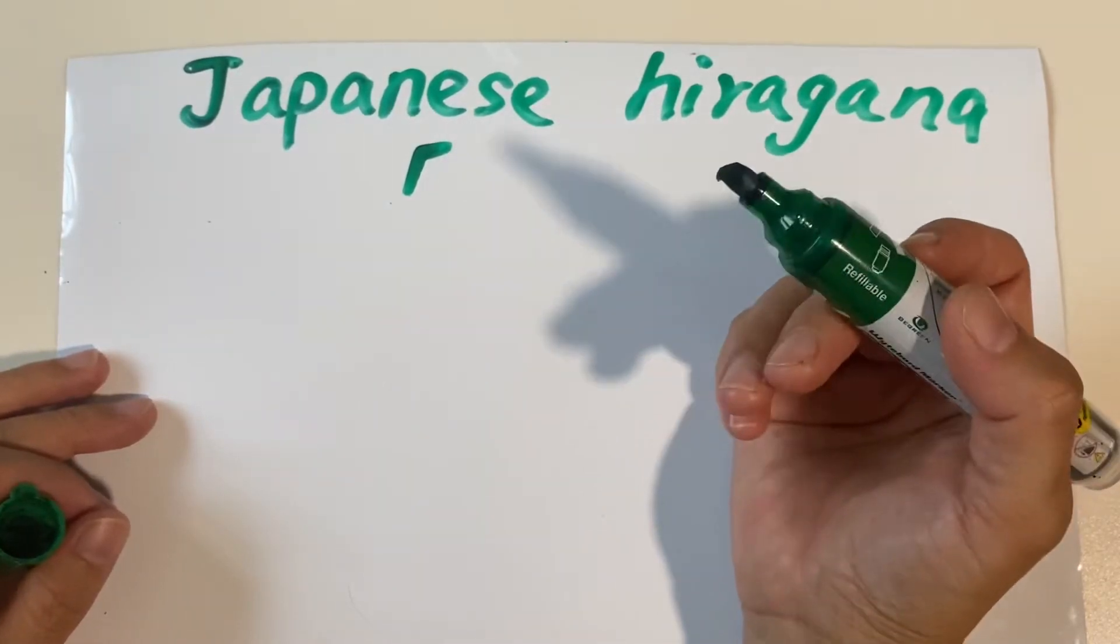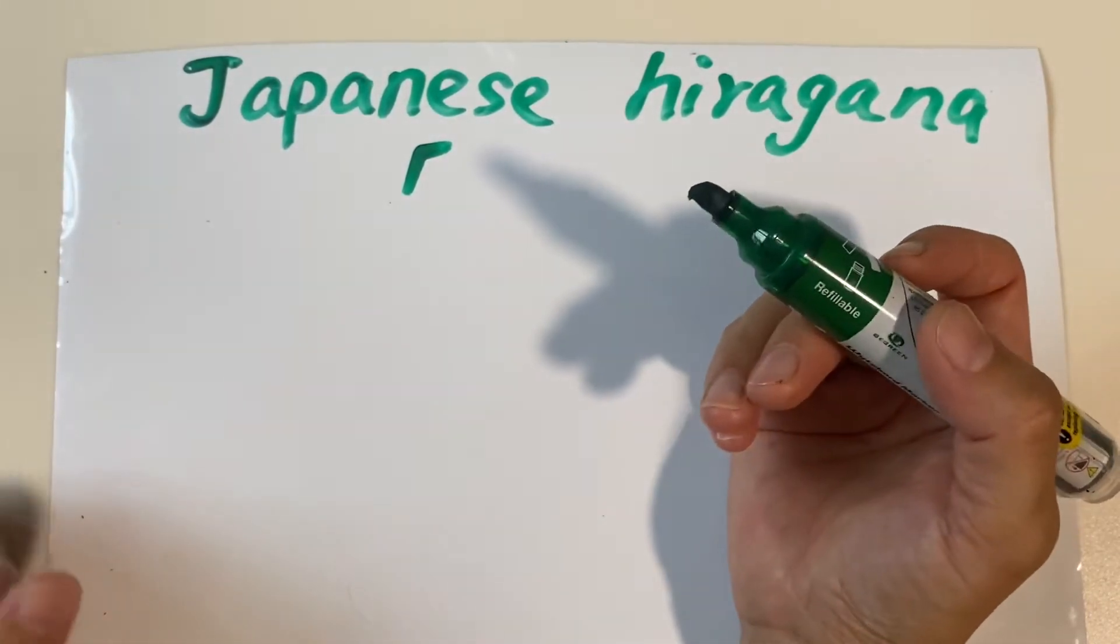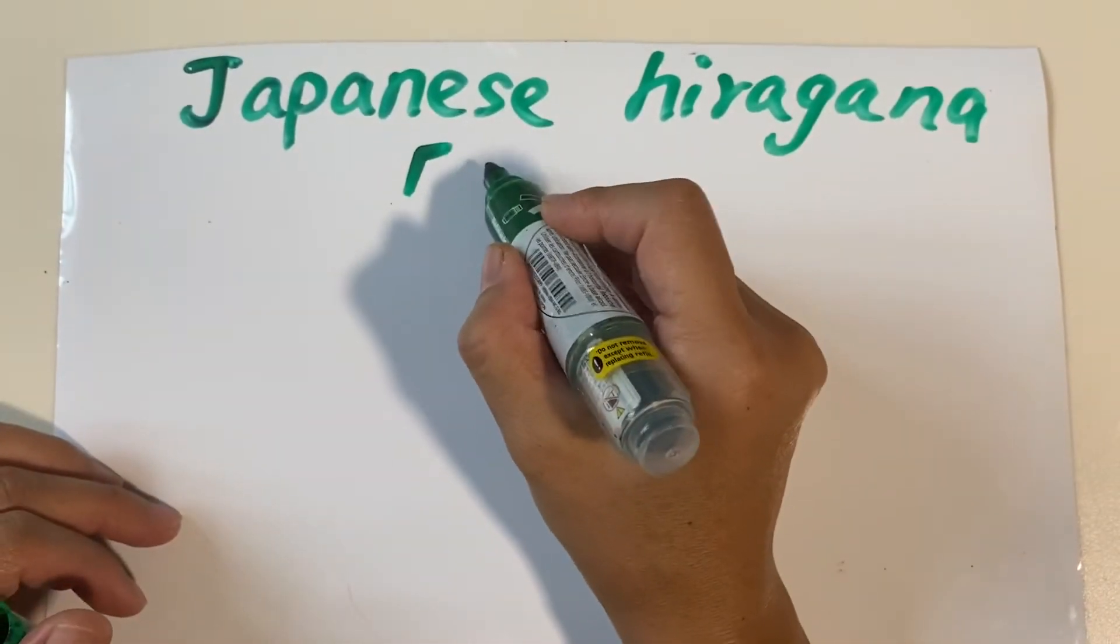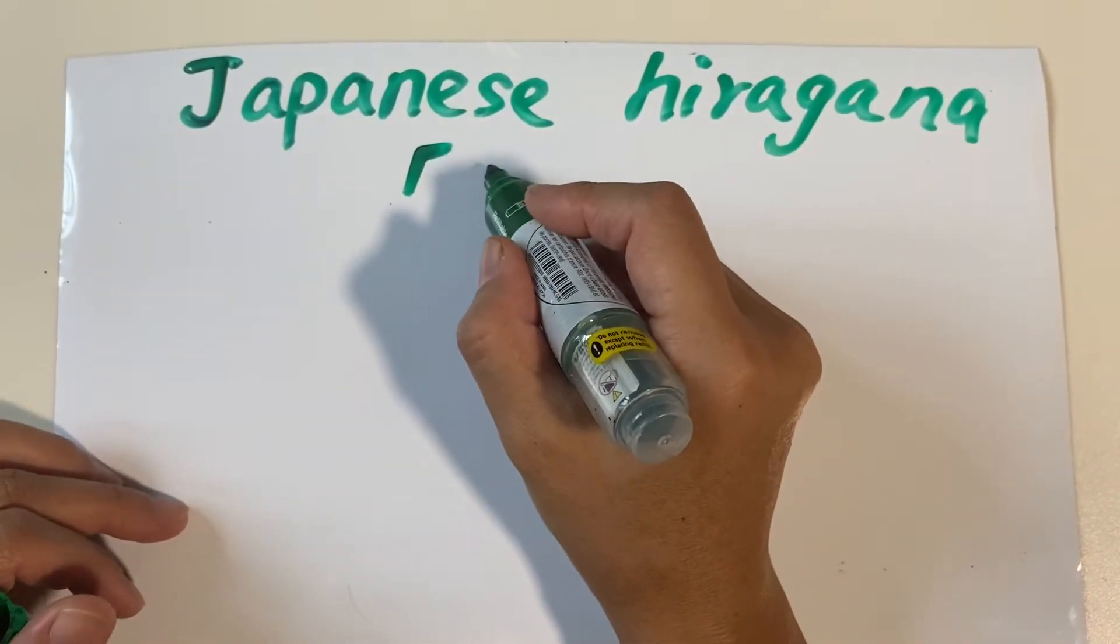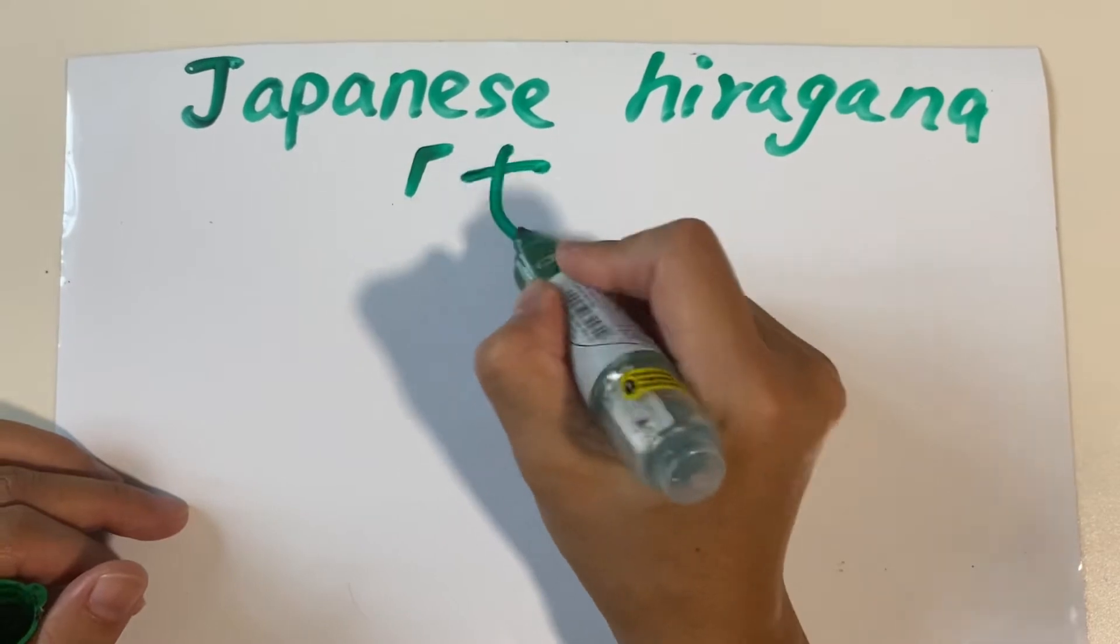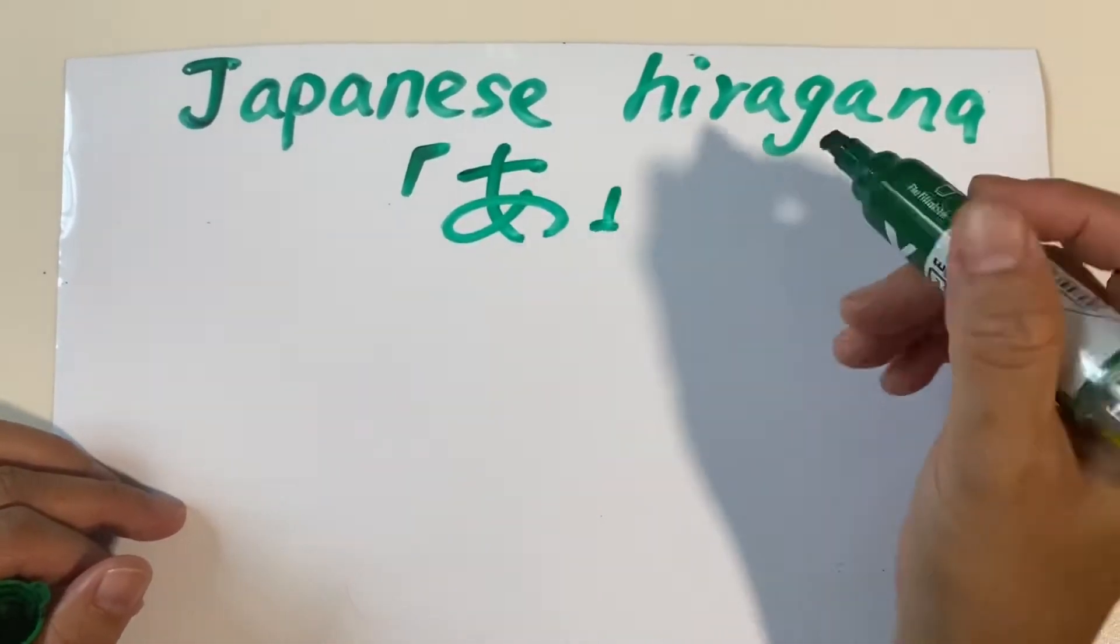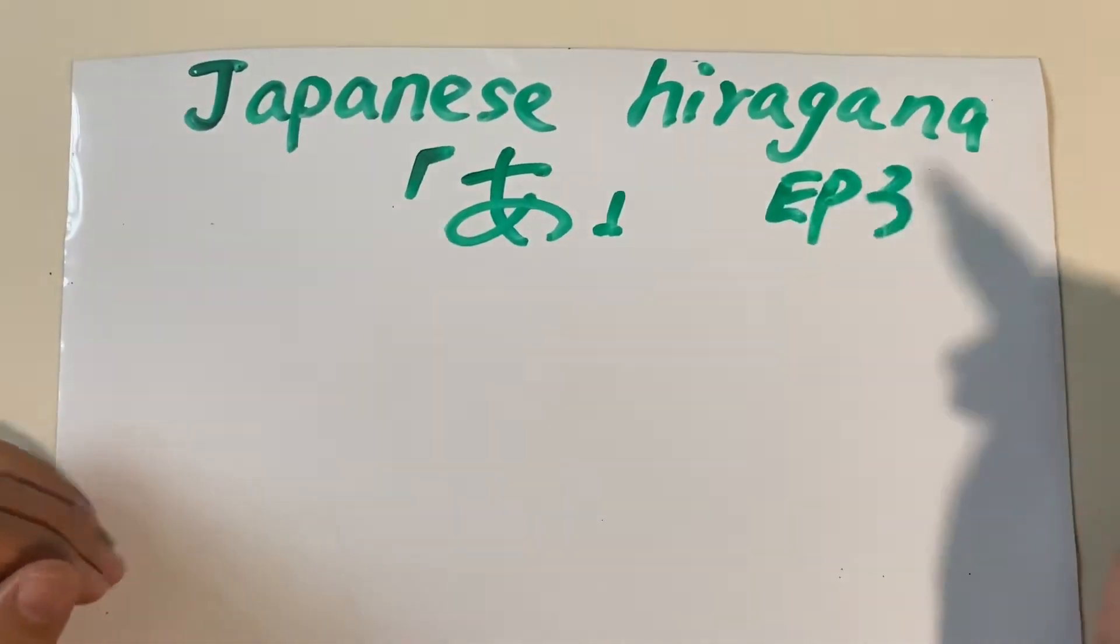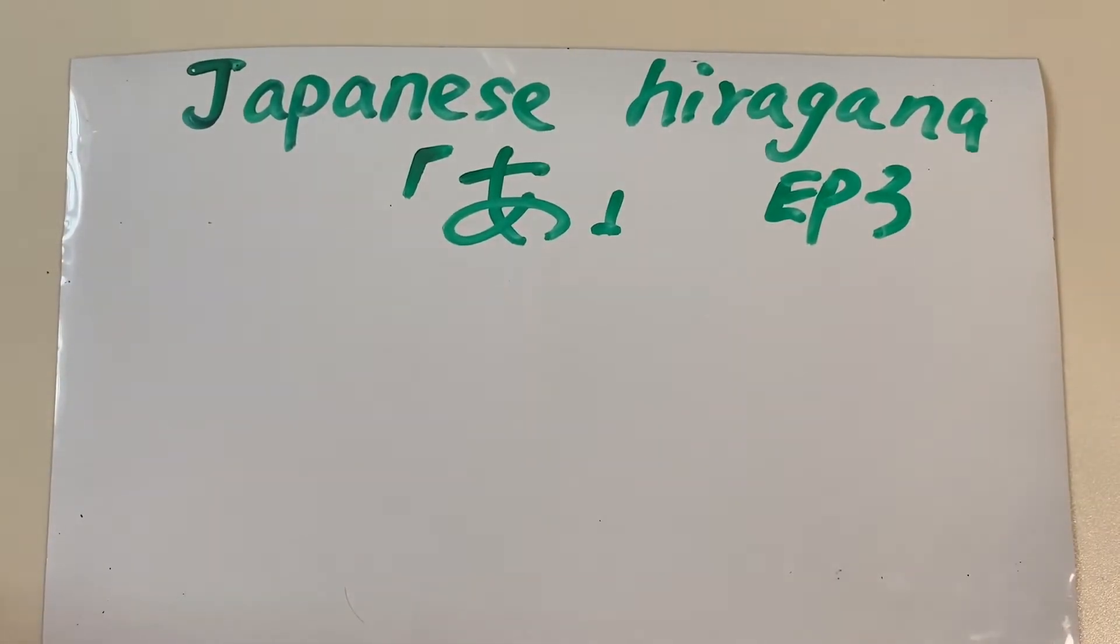Konnichiwa, Viki desu. Hi everyone, I'm Viki. How you doing? Today I would like to introduce Japanese Hiragana. Okay, today it is our episode three. I would like to share two words with everyone.